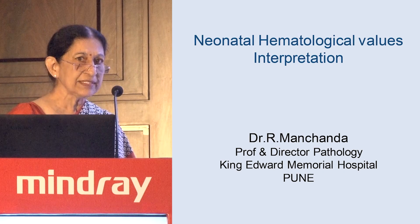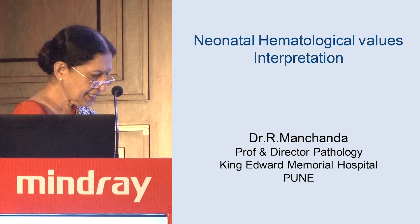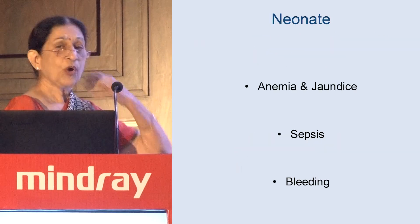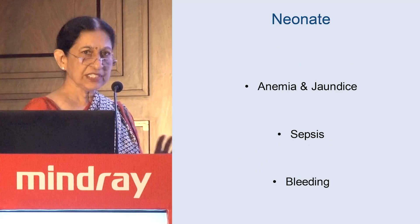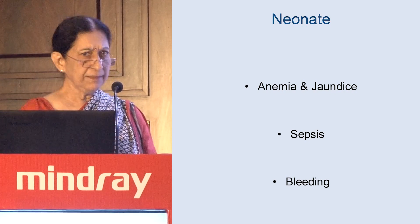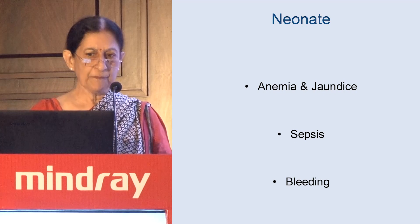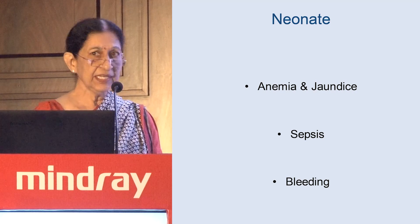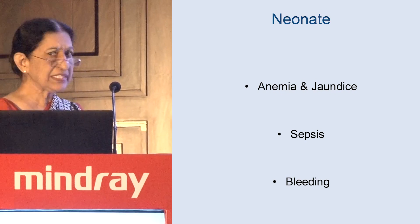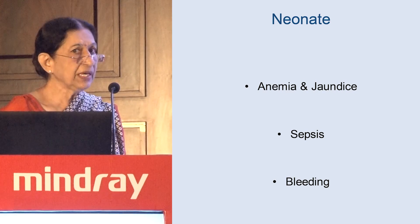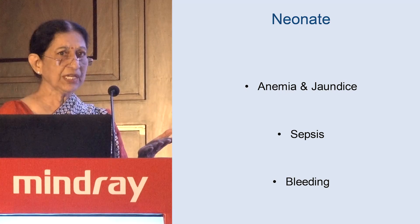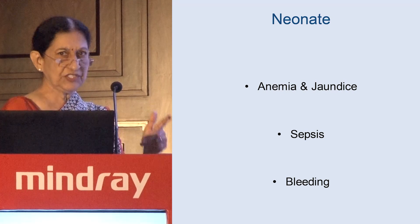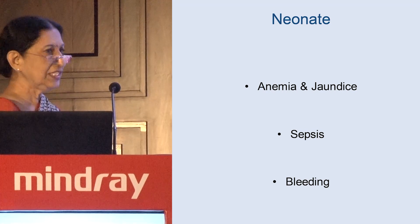Mostly I'm not going to touch on the analyzers, but the interpretation of the data coming out of these — neonatal hematological values interpretations can be very problematic. What are our pediatricians asking for? Basically three things: Is my baby anemic and jaundiced? What is the cause? Is the baby septic? And if the baby is bleeding, what is the cause? These are the basic questions pathologists and hematologists are asked every day — emergency questions. You can't wait four or five days. The babies are so dynamic; every hour they change. It's absolutely important to answer these three questions.